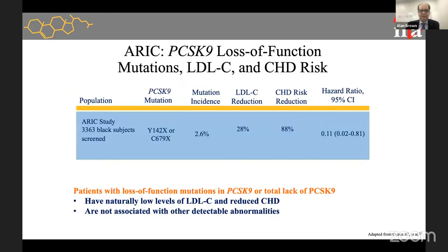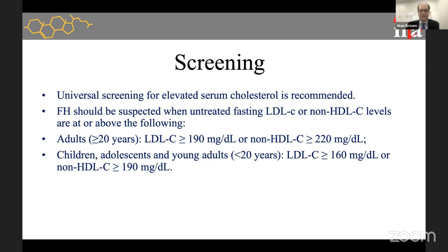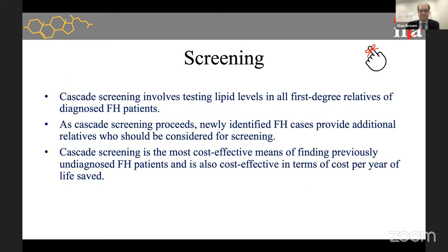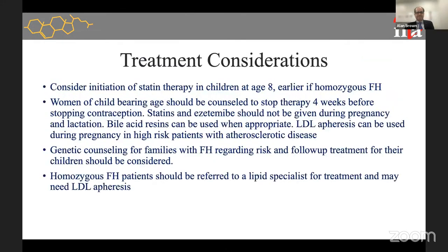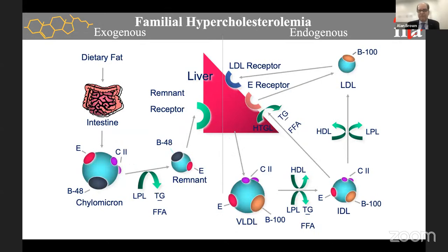Let me remind you of lipid metabolism. There are two ways we get lipids into the bloodstream: from the diet — the exogenous pathway — and from your liver's production of lipid particles — the endogenous pathway. If you eat a Whopper, the triglycerides and cholesterol get absorbed into the intestinal mucosal cell and, because fat doesn't dissolve in water, they get packaged into a lipid particle called a chylomicron.